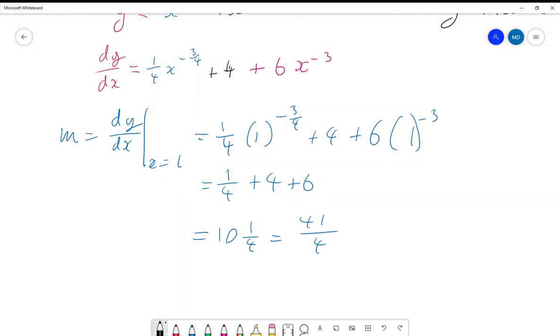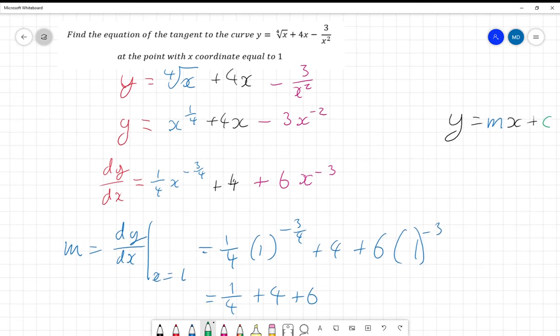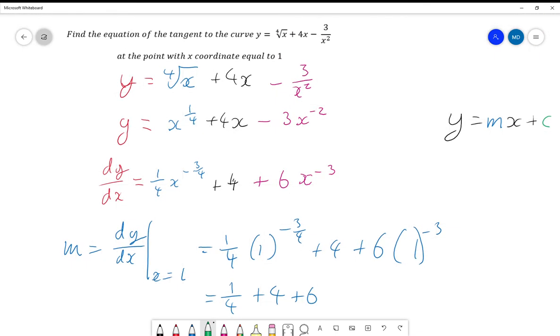And I'm going to put y equals 41 over 4, x, plus c. Now we need to work out the plus c. Now what we were doing before, every time I had to work out plus c, was we plugged in the x and y coordinates, but we don't have the y coordinate.